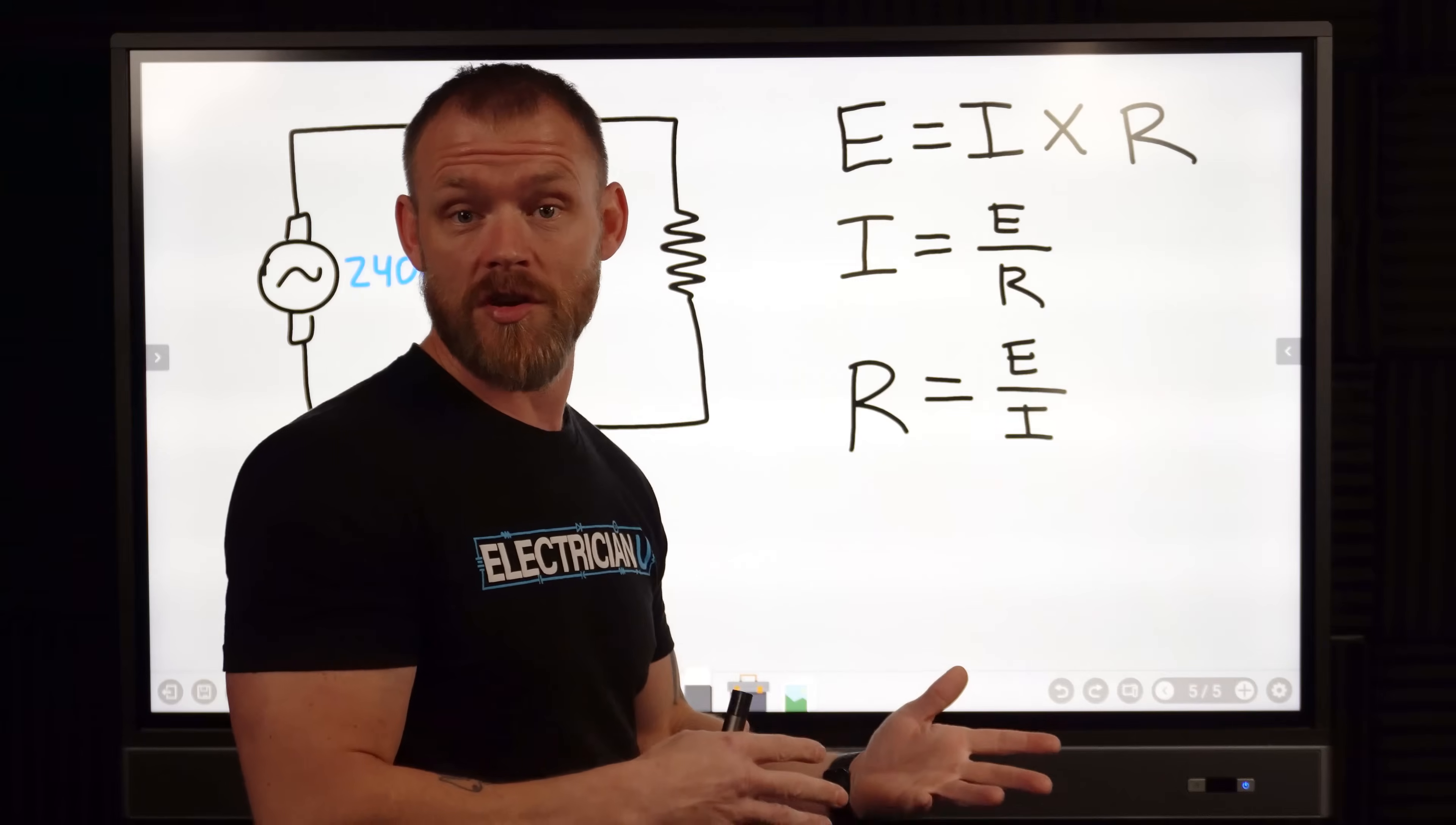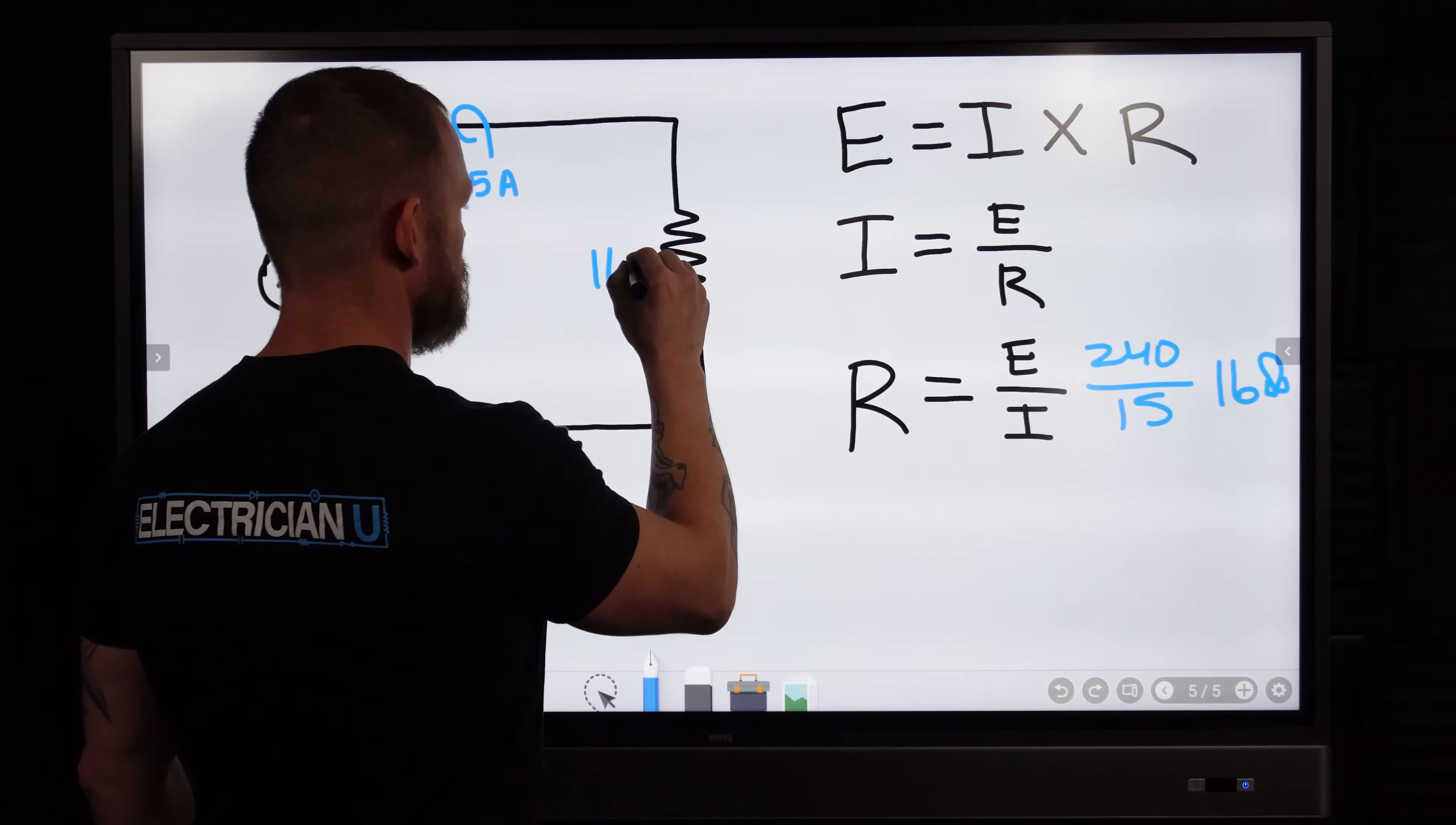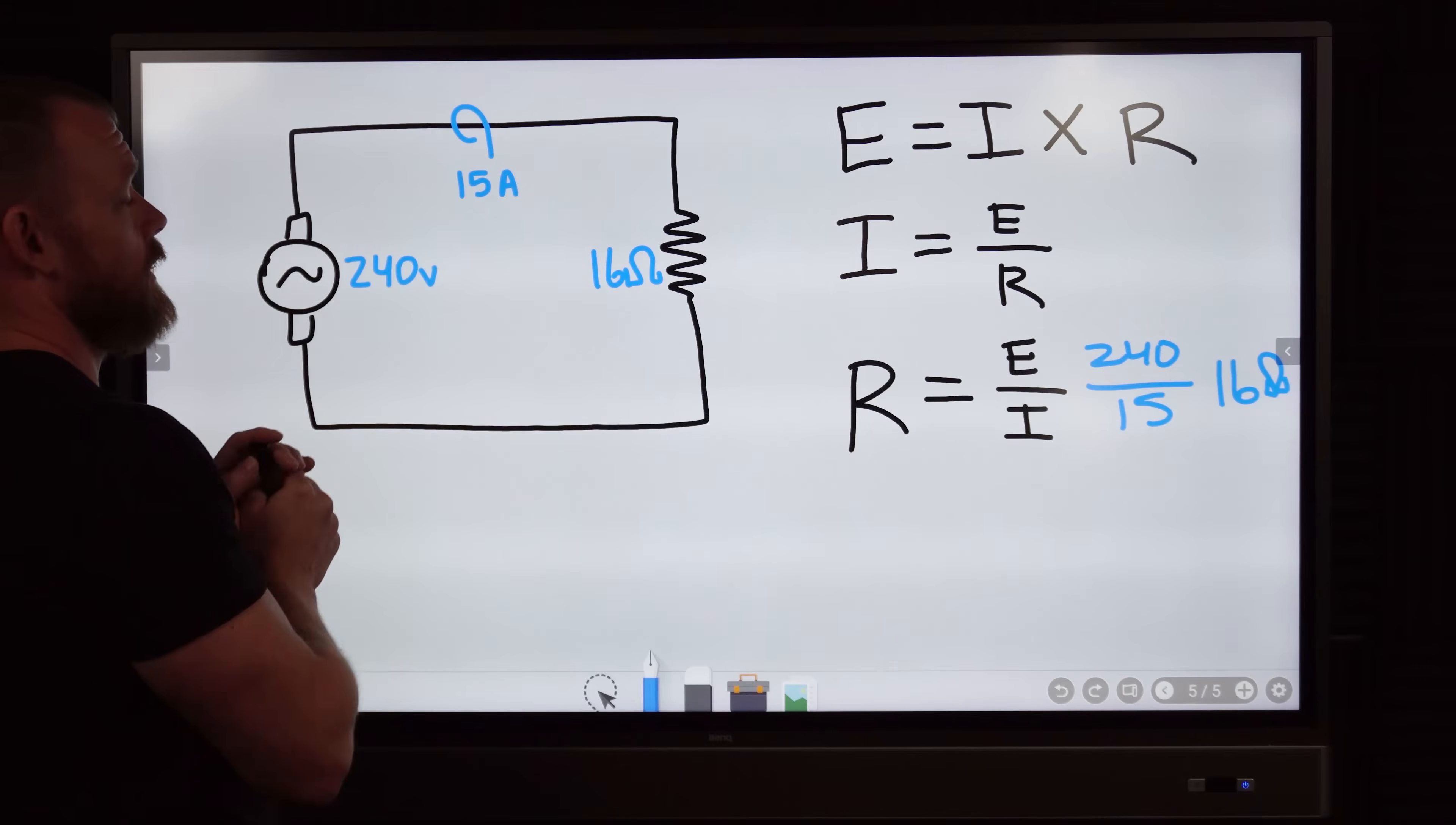So we take 240 volts and divide that by 15, 16 ohms. So now we know our resistance has gone down but our current has gone up. So current and resistance have an inversely proportional relationship. We found out that voltage and current have a directly proportional relationship.